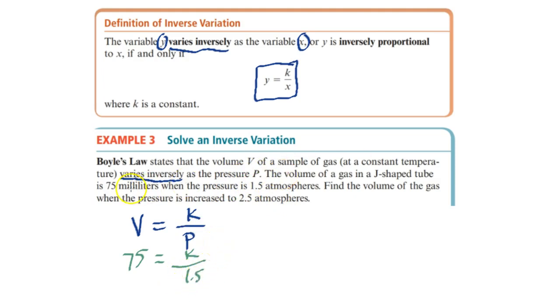So we know that when you have 75 milliliters volume, we have 1.5 atmospheres of pressure. Find the volume of the gas when the pressure is 2.5. So we want to find the volume, but first we need to solve for k.